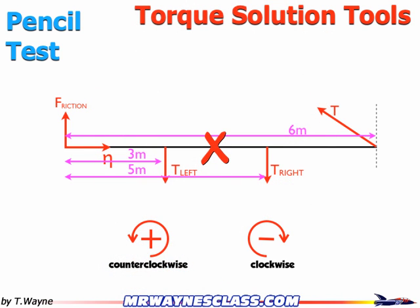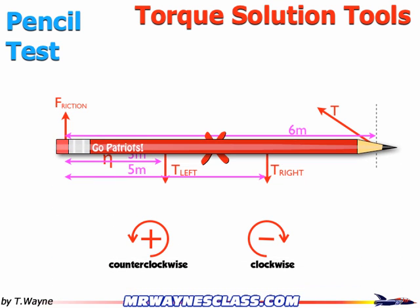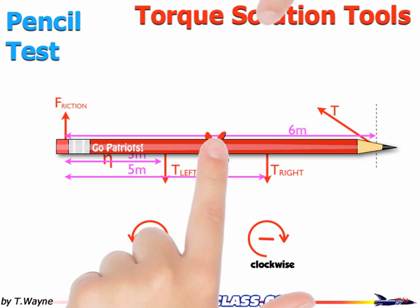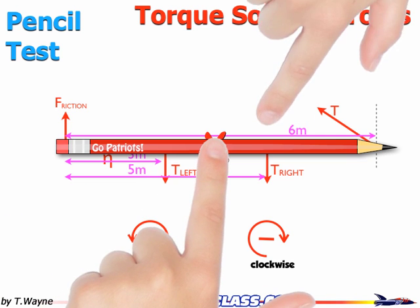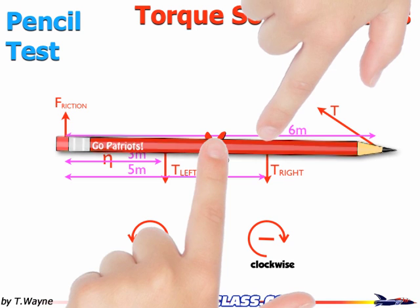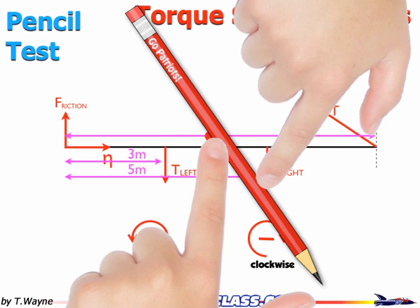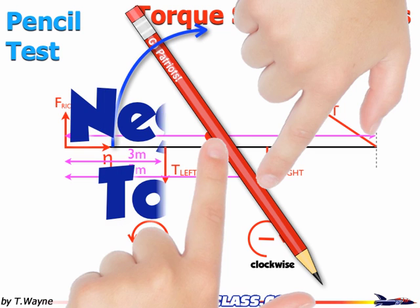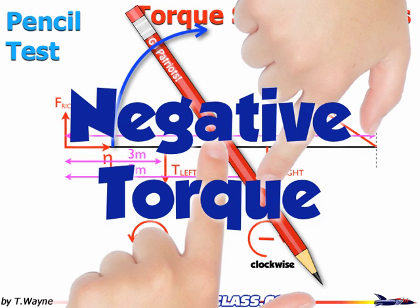Let's keep going. I've got the pivot point in the middle and the tension on the right. I'll put my pencil in place, put my finger at the pivot point, and my other finger goes down in the direction of the tension on the right. I push in the direction of the force, and I can visualize how the pencil is rotating — it's rotating in a clockwise direction. That'll be a negative torque.